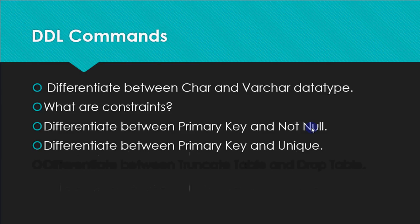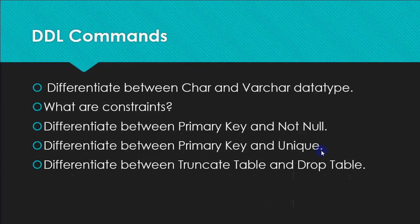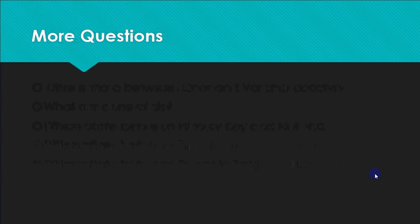Difference between PRIMARY KEY and UNIQUE: there can be only one primary key, but UNIQUE can be given to multiple columns. Also, primary key must be both NOT NULL and UNIQUE, whereas UNIQUE only needs to be non-duplicate but can be left blank (null is allowed). Regarding TRUNCATE TABLE vs DROP TABLE: TRUNCATE deletes only the data but the empty table structure remains, whereas DROP TABLE deletes the table completely — no data, no structure.